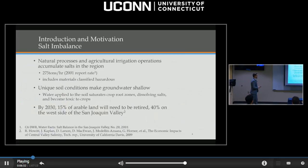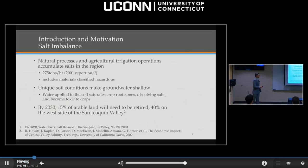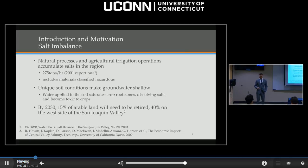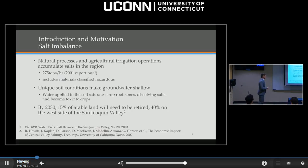The last report estimated that 275 tons an hour of salt gets deposited in this region alone. This includes many materials classified as hazardous. The unique soil conditions make groundwater very shallow, so saltwater saturates the crop root zones, dissolves embedded salts, and is very toxic to crops, impairing productivity. By 2030, literature estimates that 15% of the arable land will need to be retired. On the west side of the San Joaquin Valley — basically where all those raisins and almonds grow — we're talking 40% of the land. This is a serious economic issue.